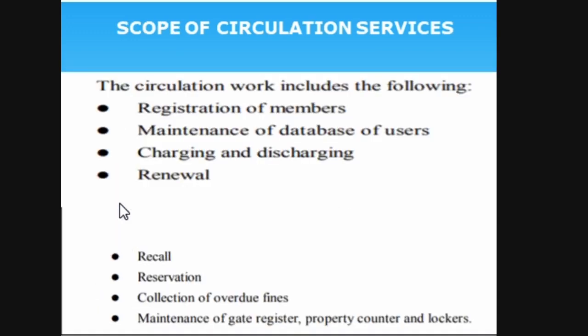The scope of circulation services includes: registration of members — in a public library anyone can become a member, while in an academic library the department sends the students list and the library prepares ID cards and enters details in the software. They also maintain a database of users organized by department — students database, faculty database, non-teaching database, and so on. Charging and discharging means issue and return. Recall means the library has the right to recall a book even before the due date if it is needed urgently.